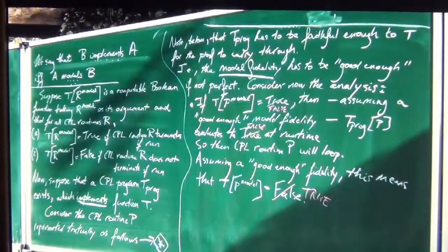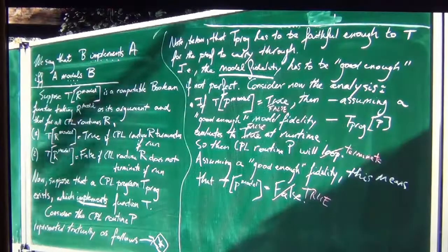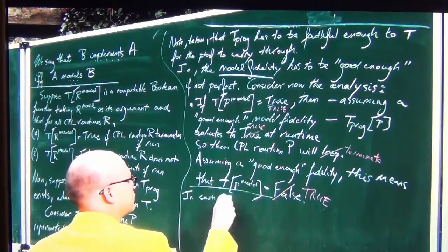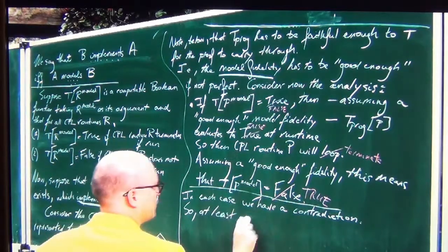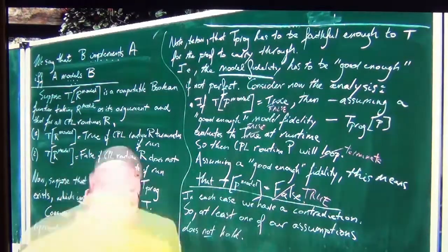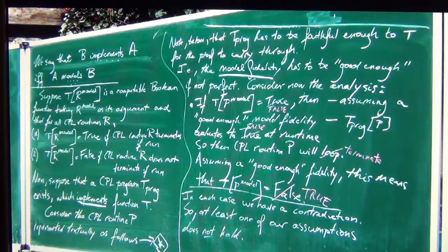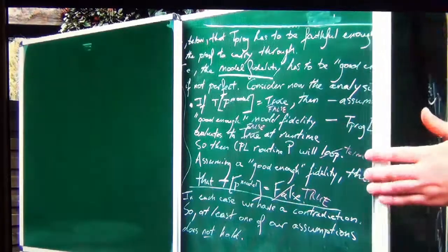So you have two cases. Both cases give us our desired contradiction. In each case we have a contradiction, so at least one of our assumptions does not hold. Strachey only had one assumption — the first one. He didn't have the second or third assumption. So I'm correcting Strachey's proof.